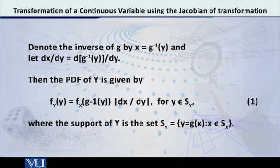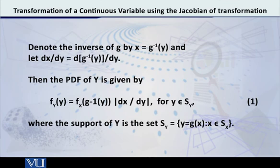X is a continuous random variable. Its PDF is f of X. And what does the support mean? It is that interval on the X-axis on which the function is defined. We denote it by S_X — the support of X, or you can even call it the space of X.